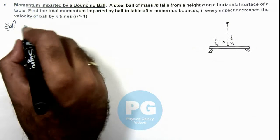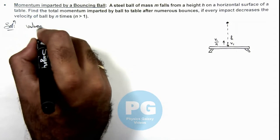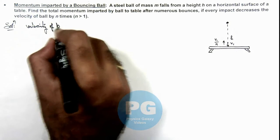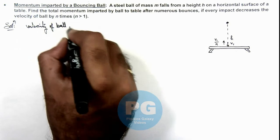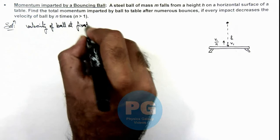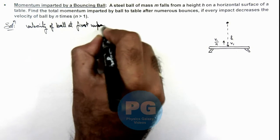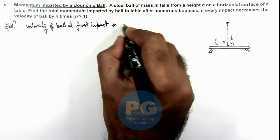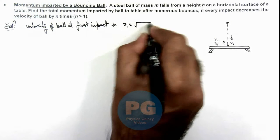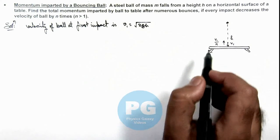So here we can write: velocity of ball at first impact is v1, which we can write as √(2gh), because it is in free fall motion.